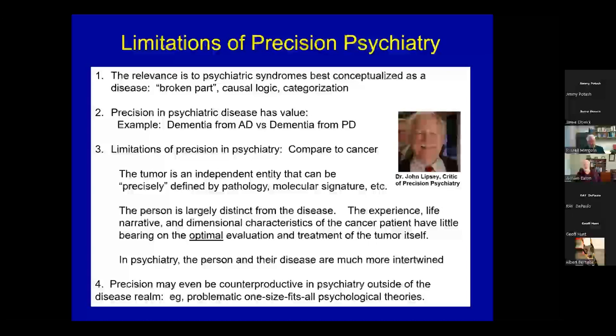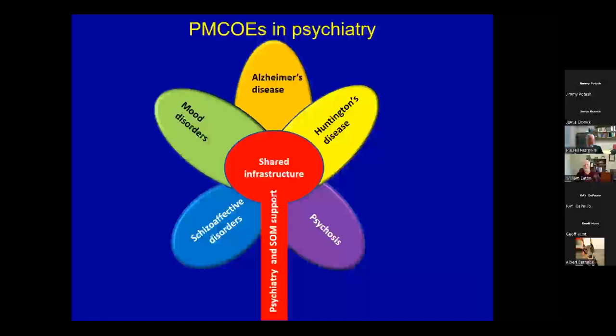Here are the current PMCOEs in psychiatry — there are five that I know of. We are the schizoaffective disorder PMCOE. There's a psychosis one where the director is Kurosawa, Huntington's disease led by Chris Ross, Alzheimer's disease by Costas Lyketsos, and mood disorders by Fernando Goez. Each of these has some commonalities — we will be sharing an infrastructure, particularly in data analytics, supported by the Department of Psychiatry as well as the School of Medicine.